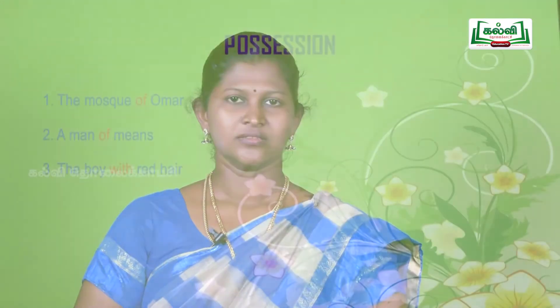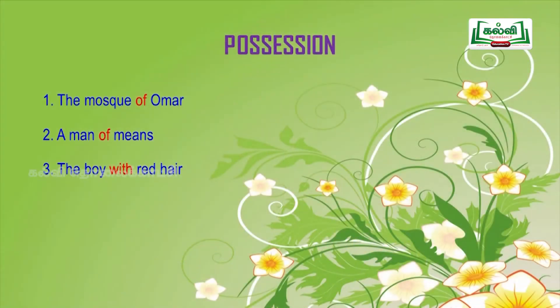Next, examples for possession. 'The mask of Omar' — of. 'A man of means' — of. 'The boy with red hair' — with. So, of and with are the prepositions for possession.